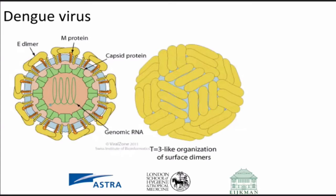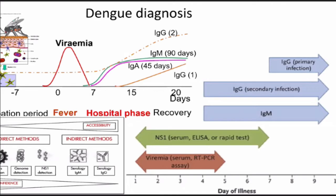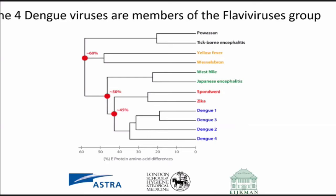Moving on to the virus — it's a positive-strand virus with this E-dimer capsule around the outside, which is what the immune response is mostly directed to. Recognising this virus during the disease is difficult because, as I've pointed out, in the viremia stage we should look for the virus, but at the disease stage it's often the immune response that we need to identify. So we need a combination of diagnostics, and we'll hear more about that in the next talk.